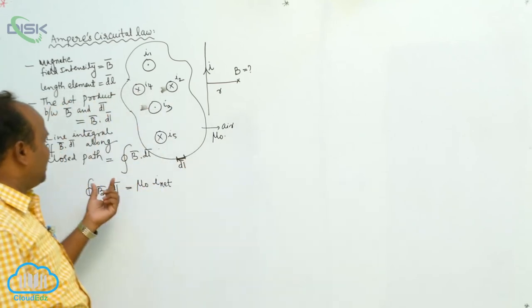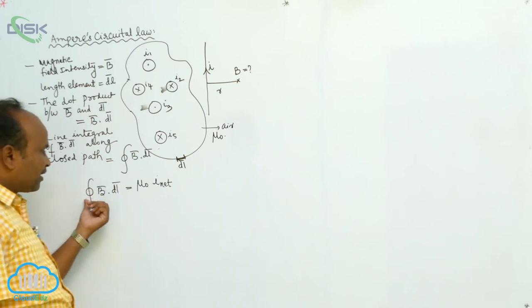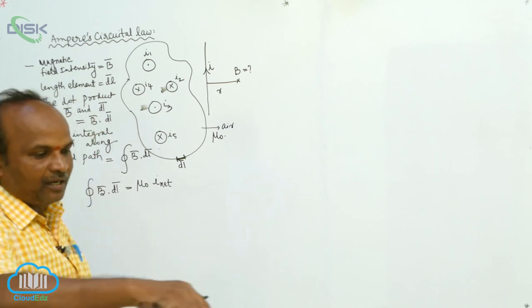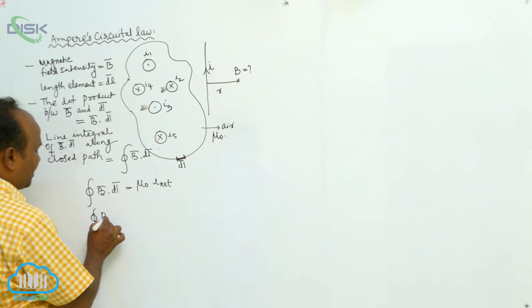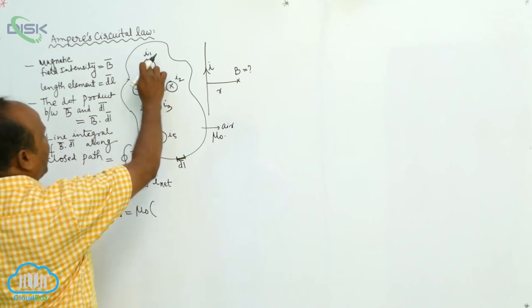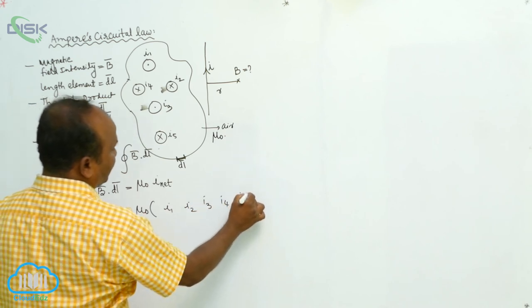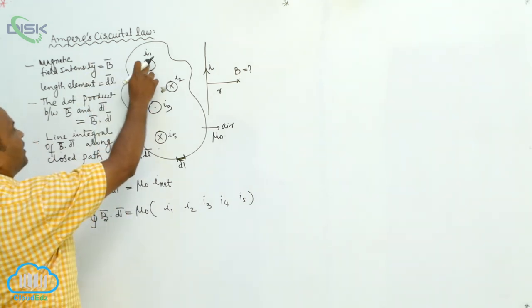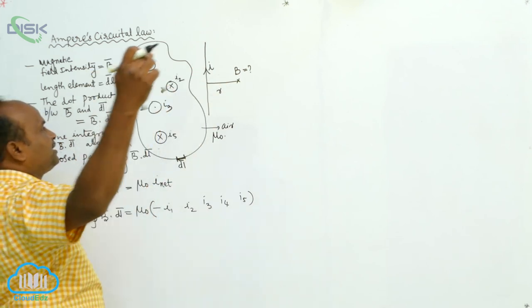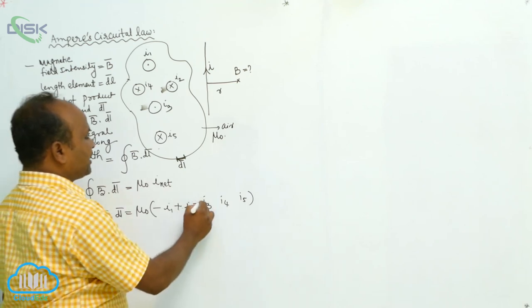The line integral of B̄·dL̄ along a closed path is equals to μ₀ times the net current over the closed path. Net current means: ∮B̄·dL̄ = μ₀(I1 + I2 + I3 + I4 + I5). There is a sign convention: outward current is taken as negative, inward current is taken as positive. So I2 is inward (positive), I3 is outward (negative), I4 is inward (positive).